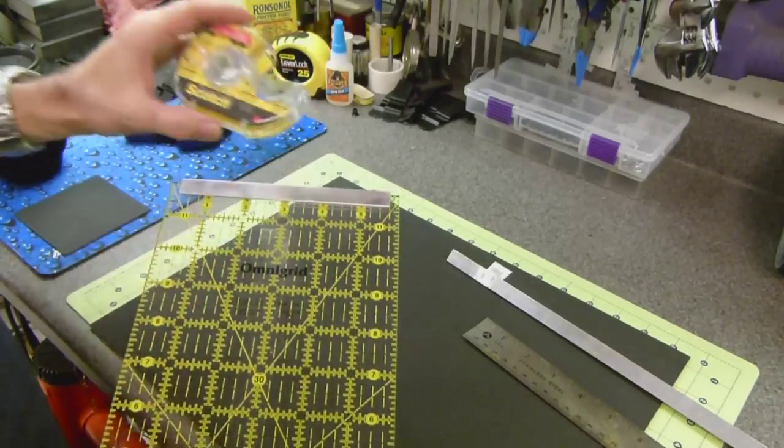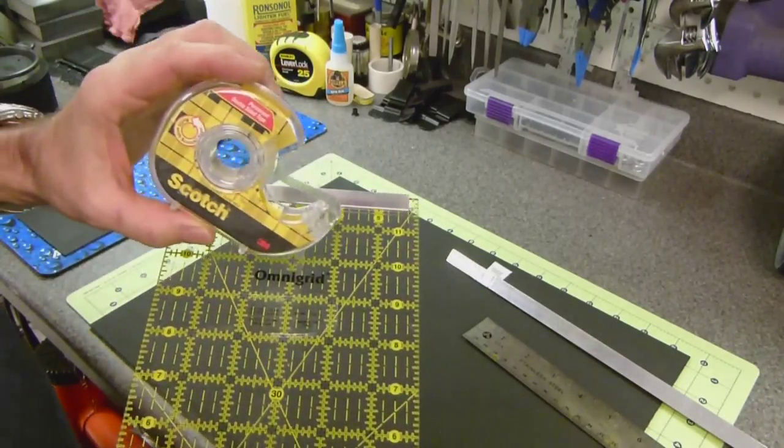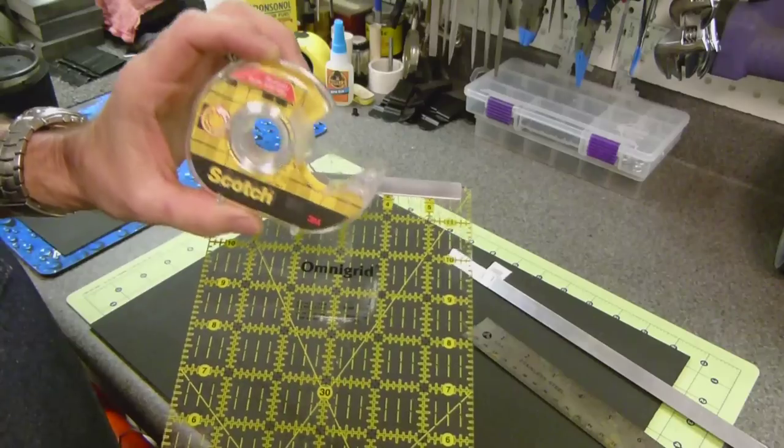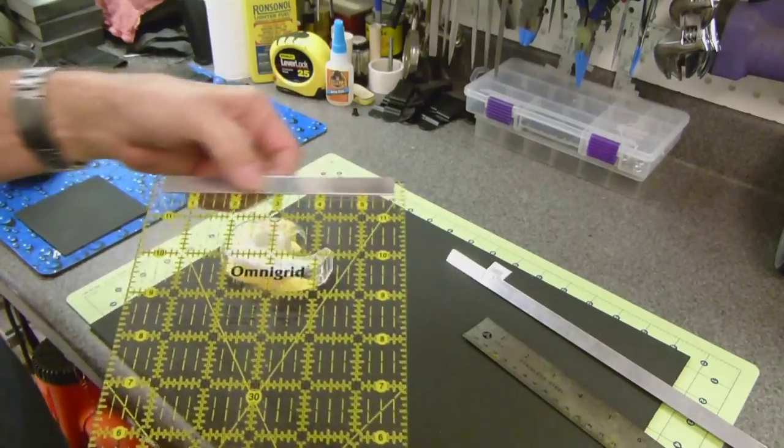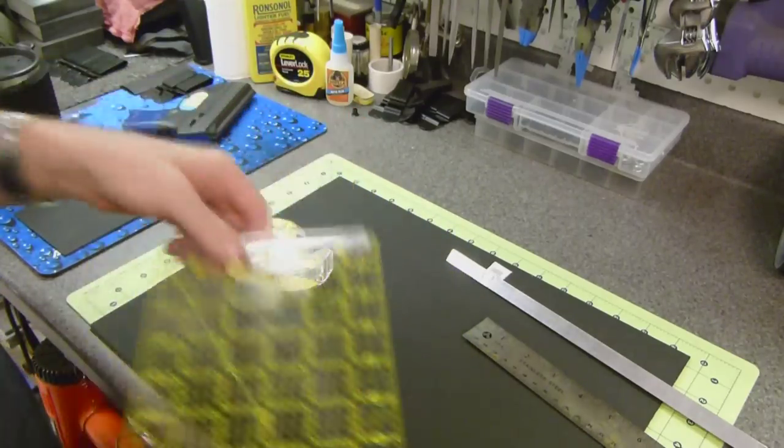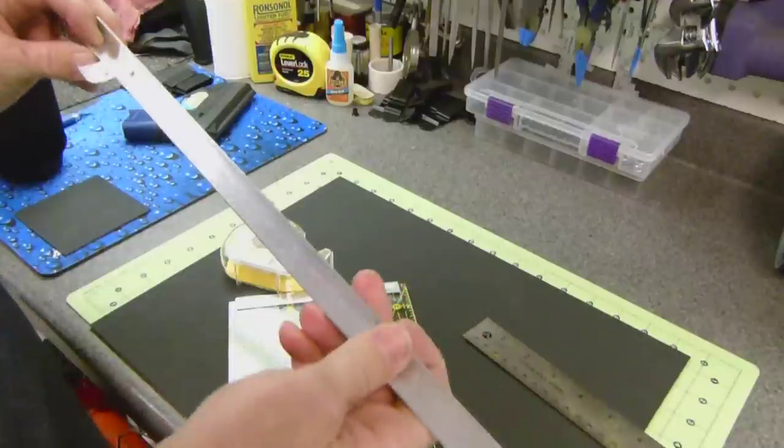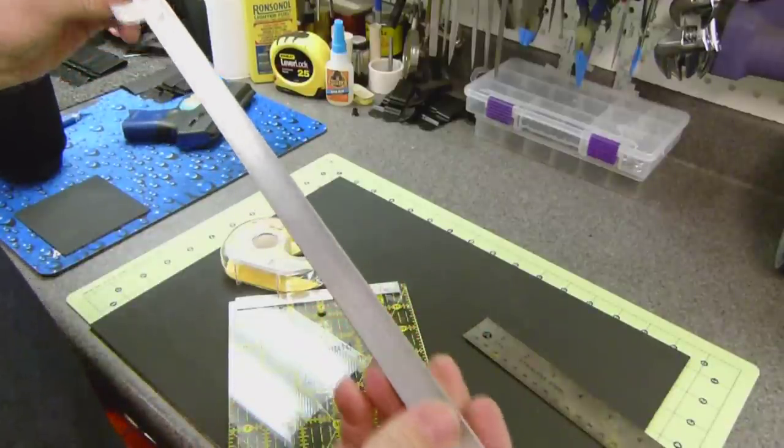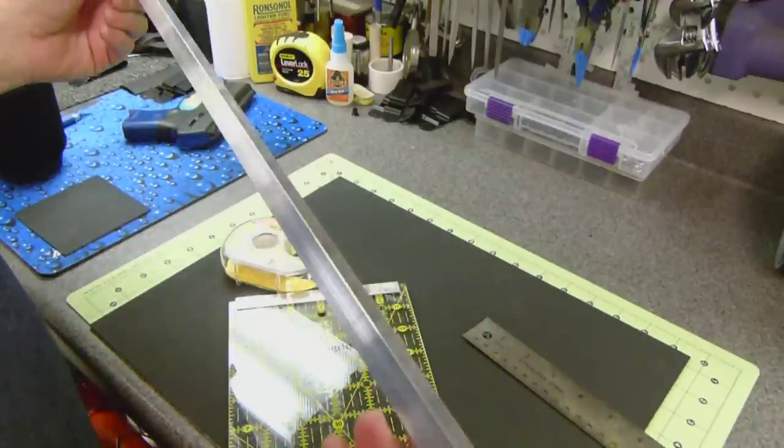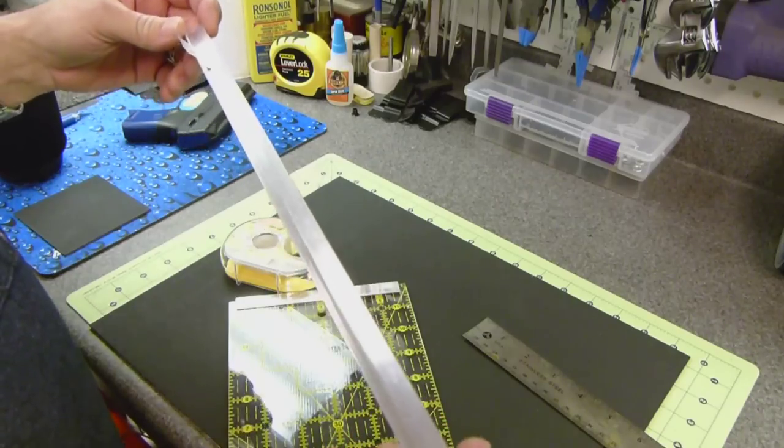What I did is I used scotch permanent double sided tape to attach the aluminum angle to the top. And the aluminum angle is a sixteenth inch by half inch three foot piece from your local lumber place.